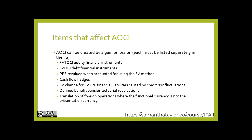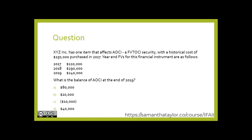Let's look at a question. XYZ Inc. has one item that affects AOCI: a fair value through OCI security with a historical cost of $250,000 purchased in 2017. Year-end fair values for this financial instrument are as follows: in 2017, it was worth $220,000; in 2018, it was worth $290,000; in 2019, $240,000. What is the balance of AOCI at the end of 2019?